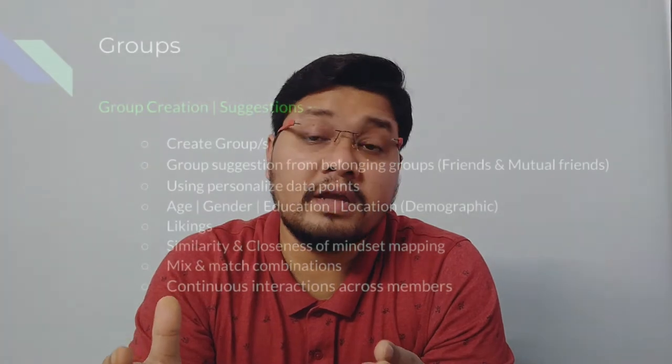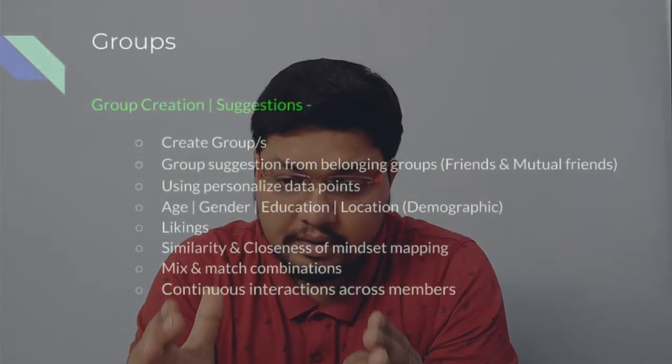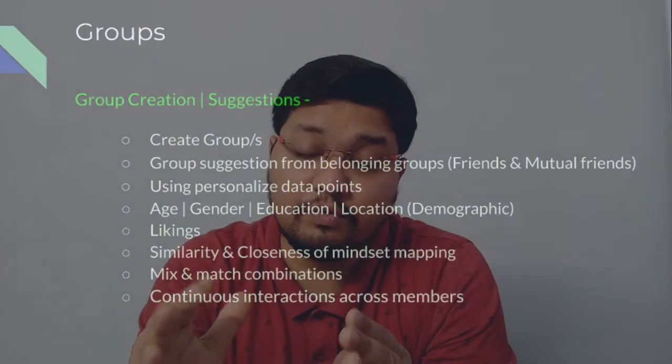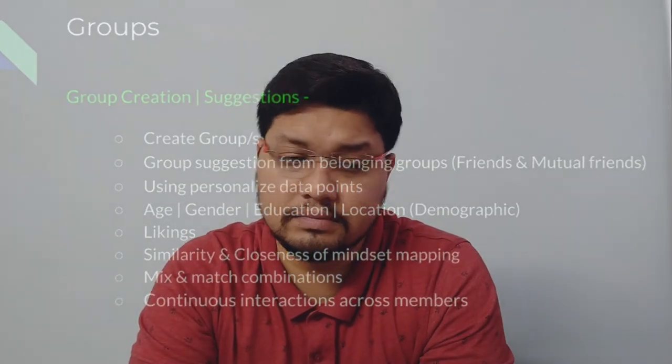Group component covers group creation and group suggestions. This includes creating a group, group suggestions from other groups where your friends or mutual friends already belong, and grouping using personalized data points like age, gender, education, location, likings, similarity and closeness of mindset mapping, mix-and-match combinations, and continuous interaction across members.